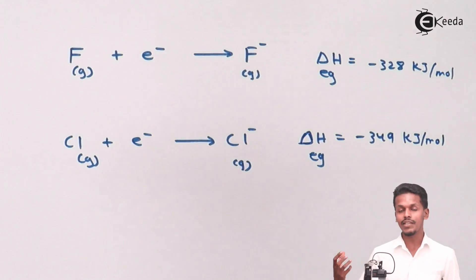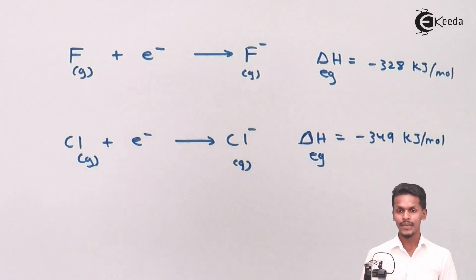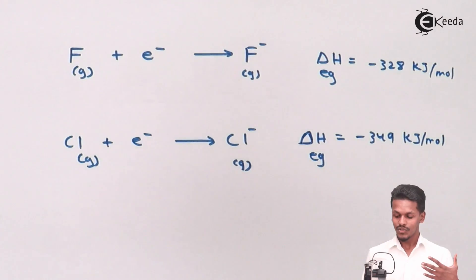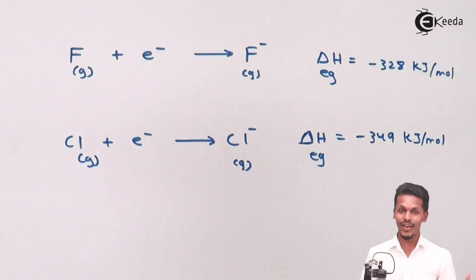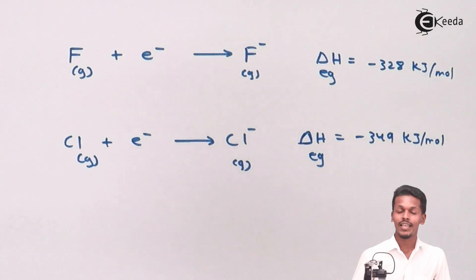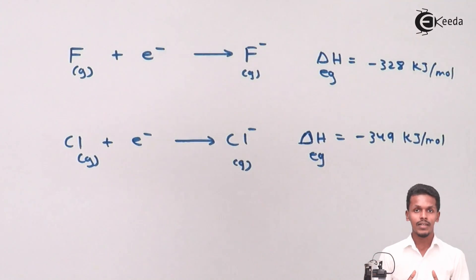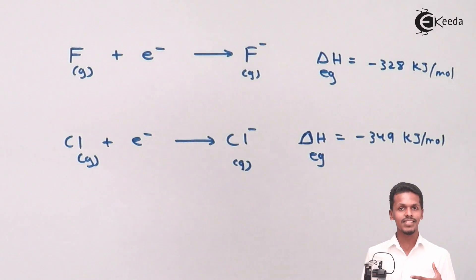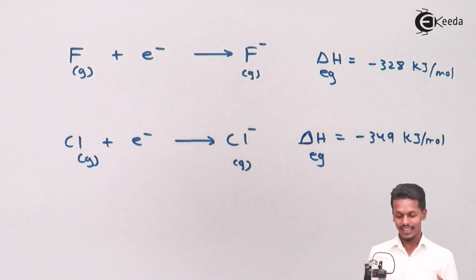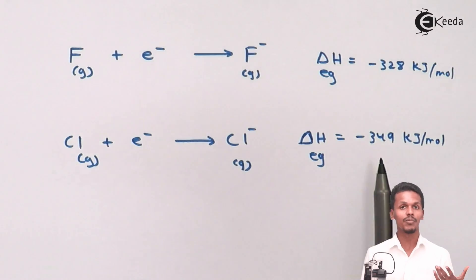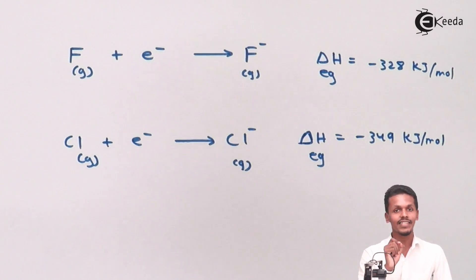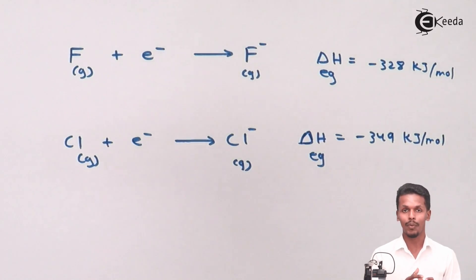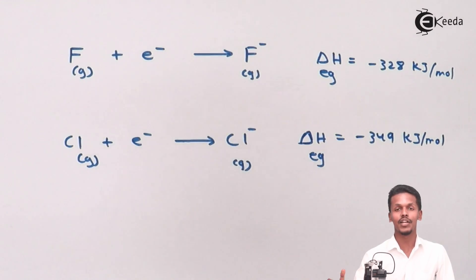So this means the energy released when an electron is accepted by fluorine is less than the energy released when an electron is accepted by chlorine. The magnitude is more for chlorine and less for fluorine, but this is not the usual trend. We learned that going down the group, electron gain enthalpy becomes less negative — but here it is the inverse: fluorine is less negative while chlorine is more negative. So fluorine has less electron gain enthalpy because of its high electron density and the repulsion that occurs in the 2p orbital.